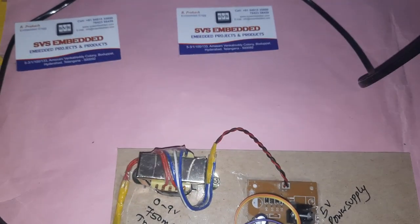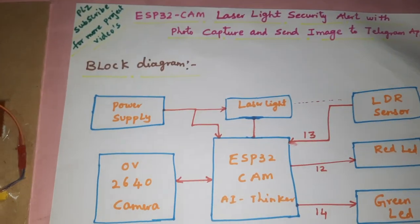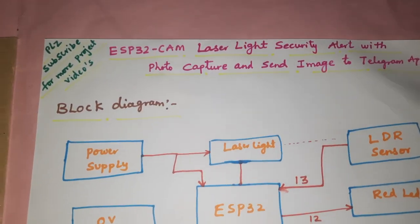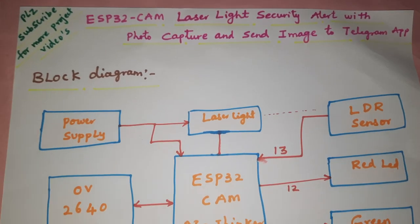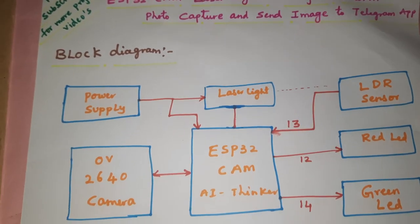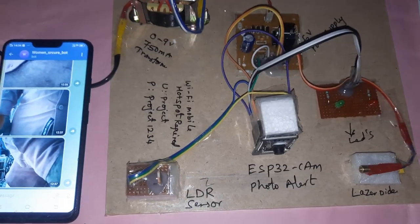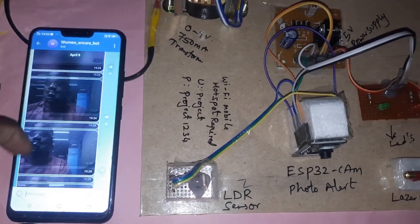Hi, this is from SVS Embedded. The project title is ESP32 Cam Laser Light Security Alert with Photo Capture, and it sends images to the Telegram app — so we are getting the images okay.